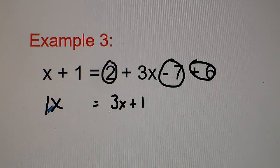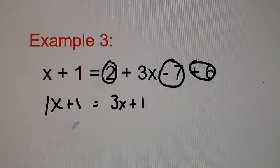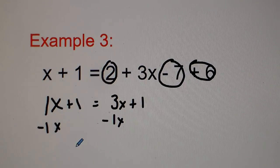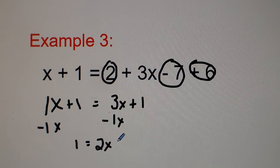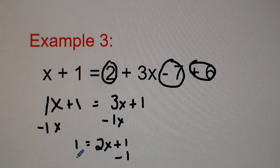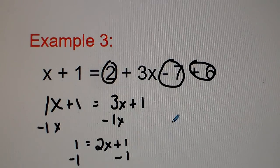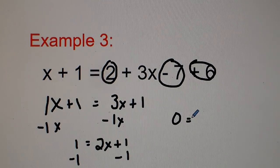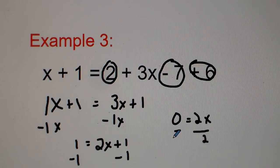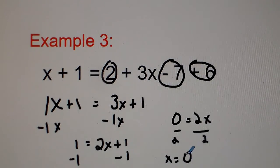I carry down 1x plus 1. I then subtract 1x from both sides, so I get 1 equals 2x plus 1. I then subtract 1 from both sides, so we get 0 equals 2x. Divide both sides by 2 and we get x equals 0. Remember, 0 is a number — it's okay if x equals 0, that's not a problem.